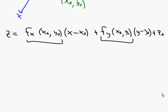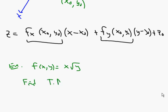Let's do an example. Suppose we have f of x comma y equals x times the square root of y, and we want to find the tangent plane at the point 1 comma 4 — or more precisely at the point 1 comma 4 comma f of 1 comma 4.